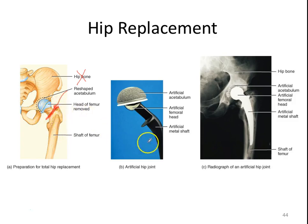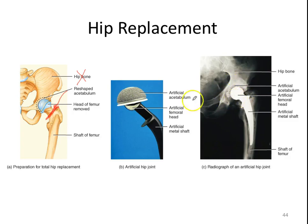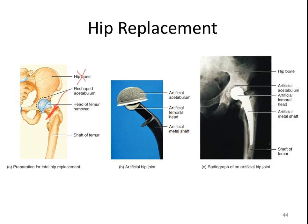In this radiograph, you can see the artificial acetabulum being inserted into the socket, and then they drive the shaft of the artificial femur down into the actual bone. These days, after a hip replacement, you come out of anesthesia and they have you up and walking around very quickly.